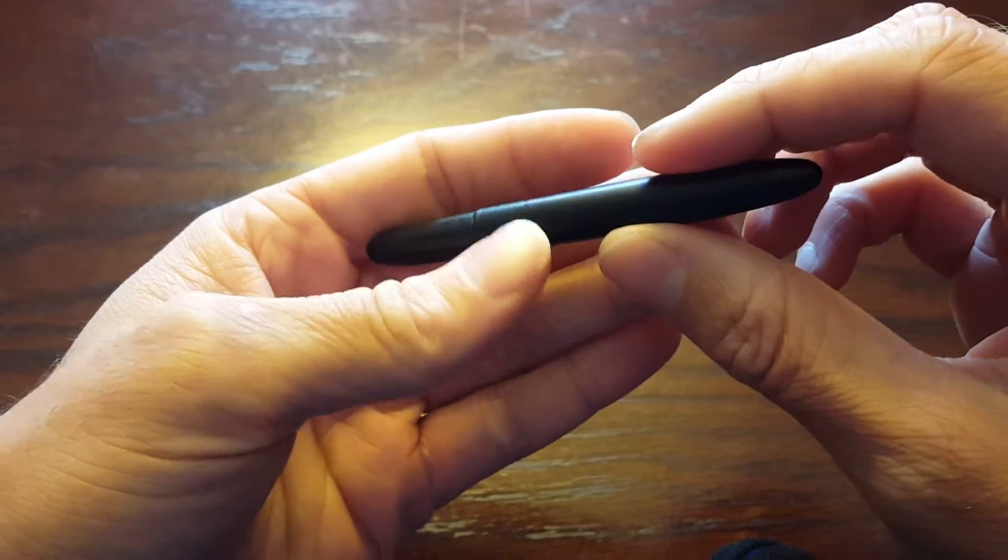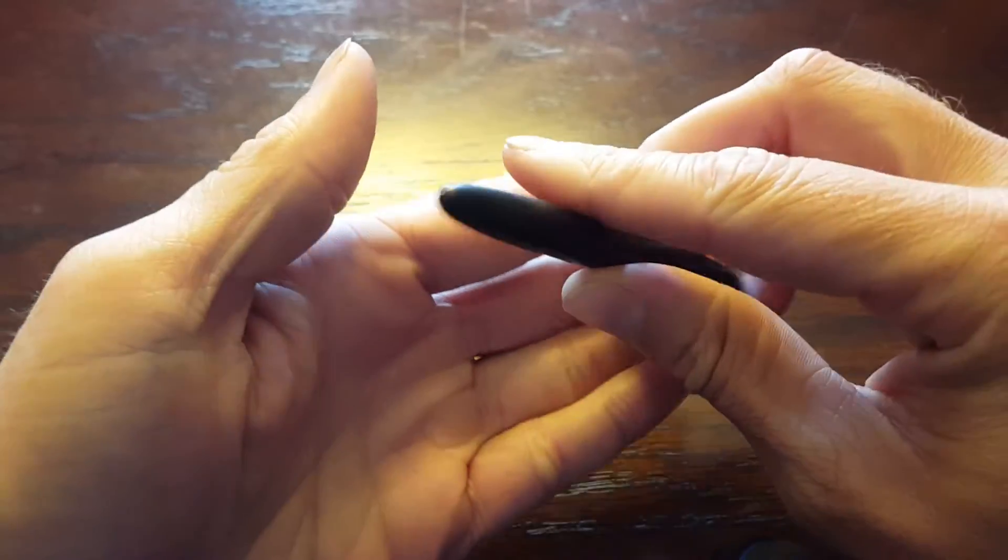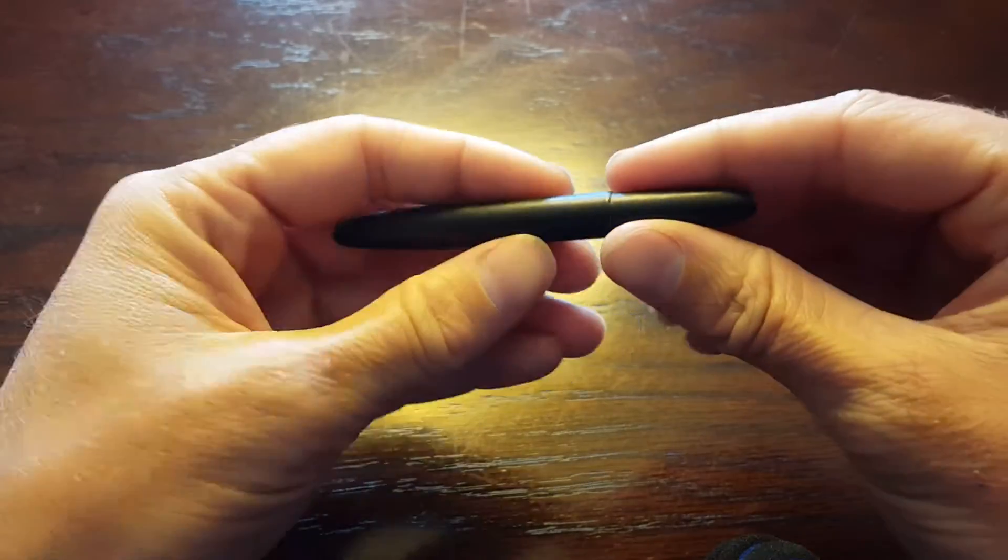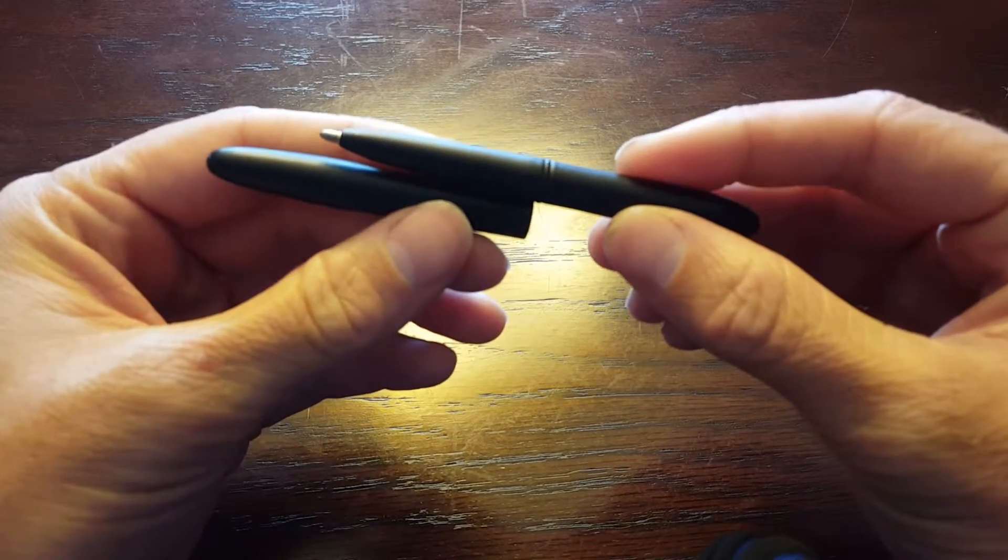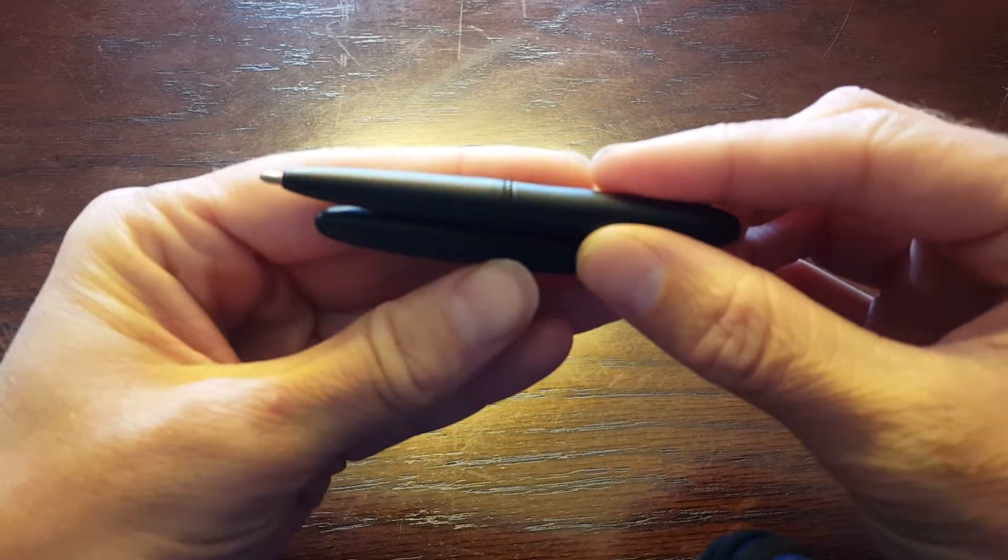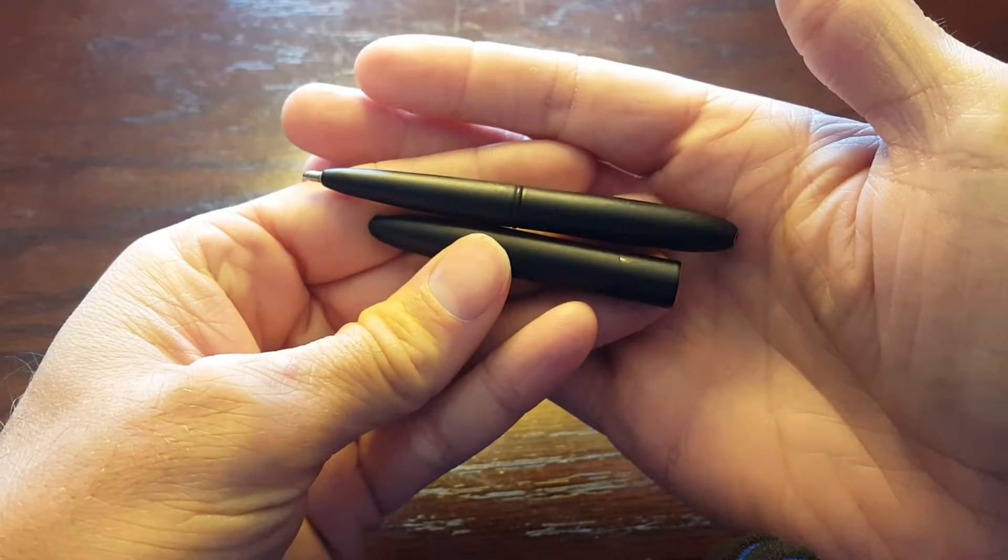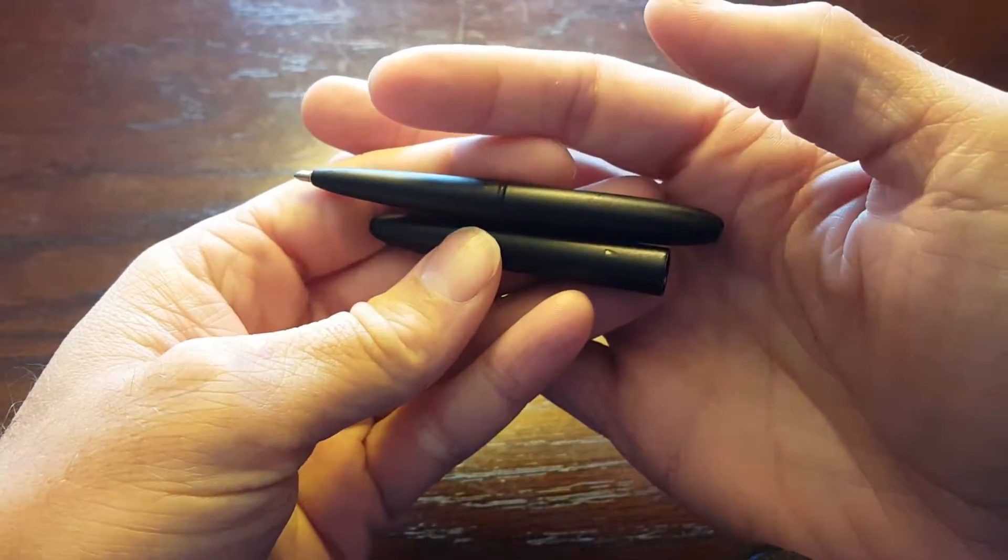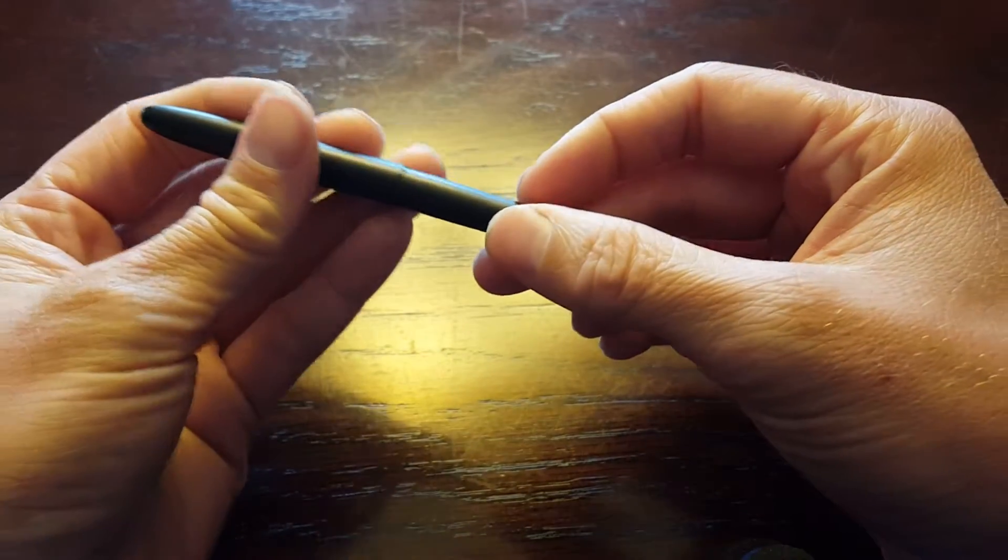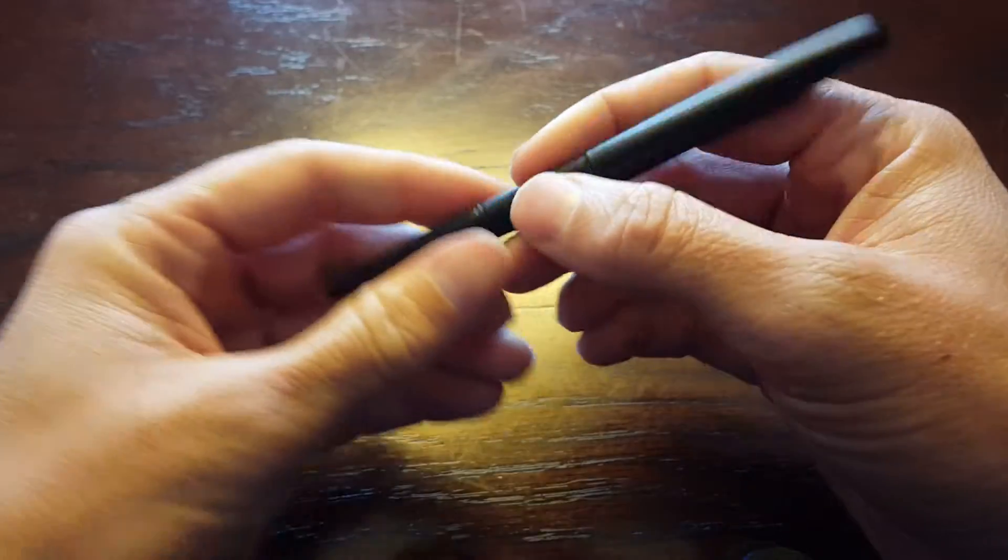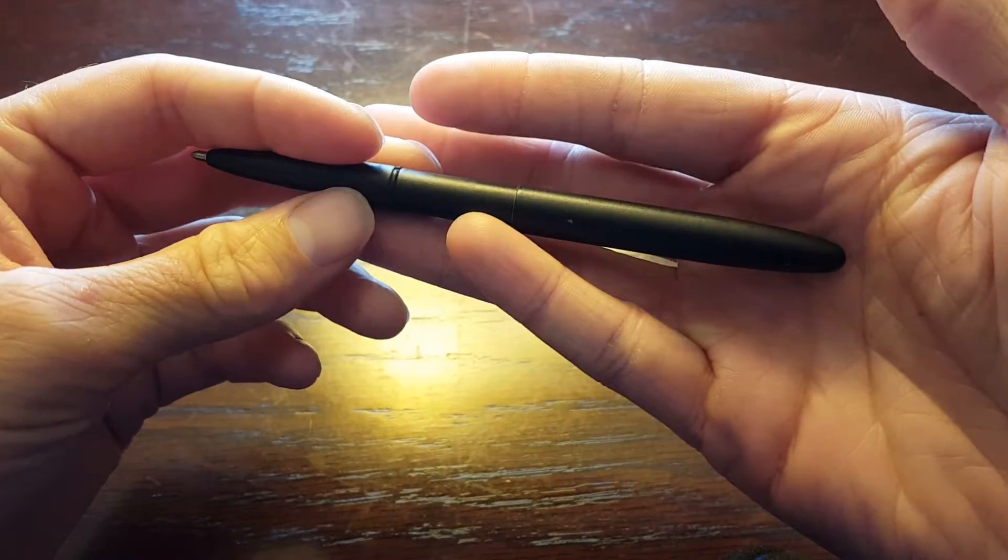It's been in bags, rolled around in drawers, and it has held up pretty darn good. As you can see, except for the odd little chip here and there, the coating is still on there very well. Where it's come off, it's because it hit somewhere.